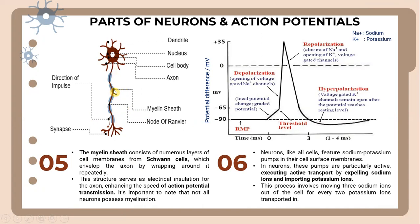The myelin sheath consists of numerous layers of membrane derived from Schwann cells, which envelop the axon by wrapping around it repeatedly. This structure serves as electrical insulation for the axon, enhancing the speed of action potential transmission.